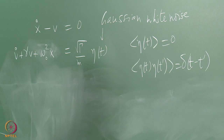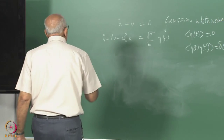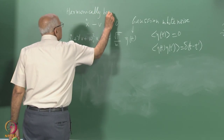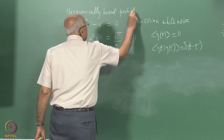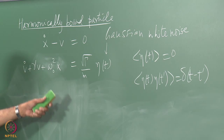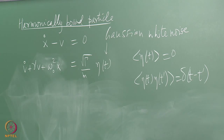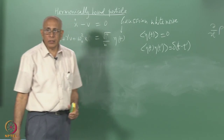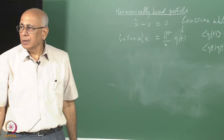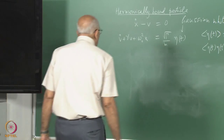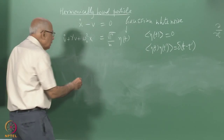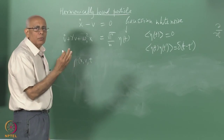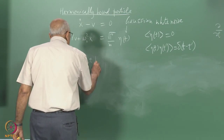We can answer this by adding the restoring force. Dividing through by m, we get: v-dot + gamma v + ω₀² x = sqrt(gamma/m) eta(t). This is the case of a harmonically bound particle. Everything else is unchanged. The velocity again thermalizes and there is an equilibrium velocity distribution — again the Maxwellian — but now there is also a potential energy term from the harmonic potential.